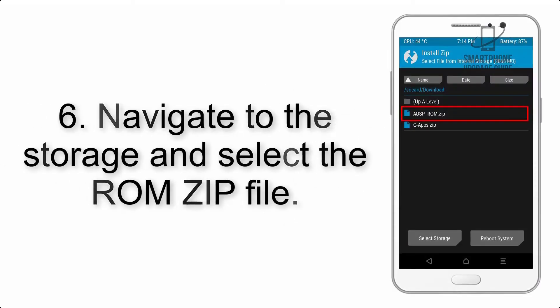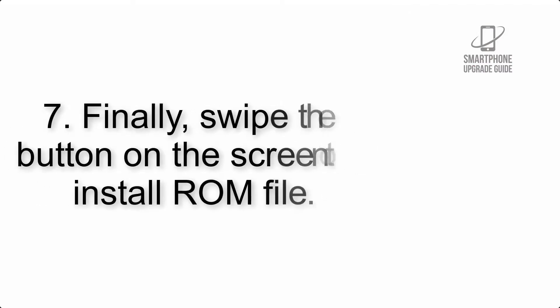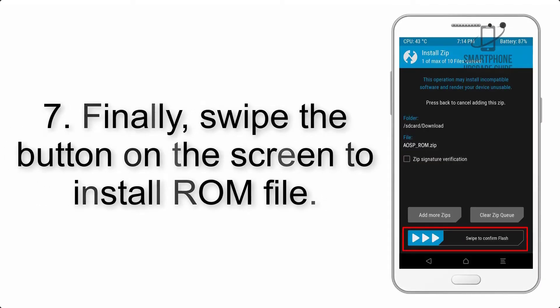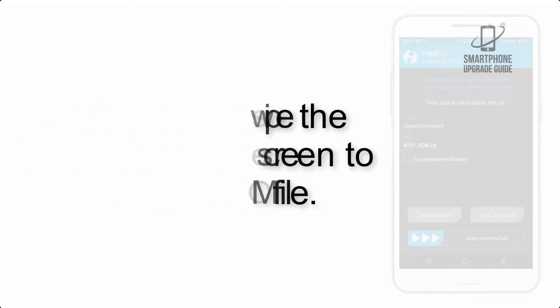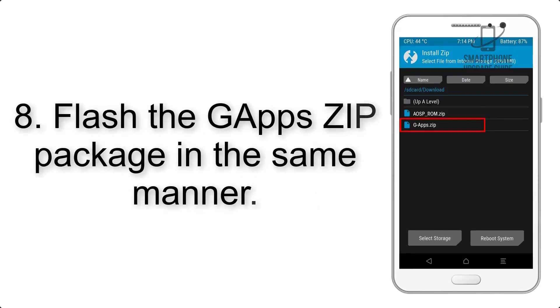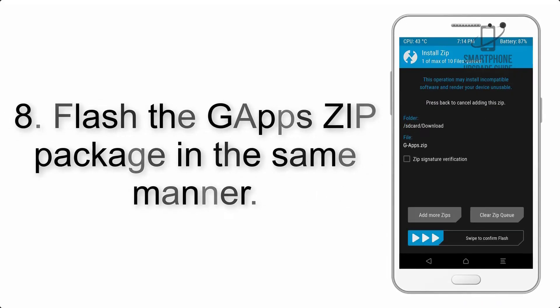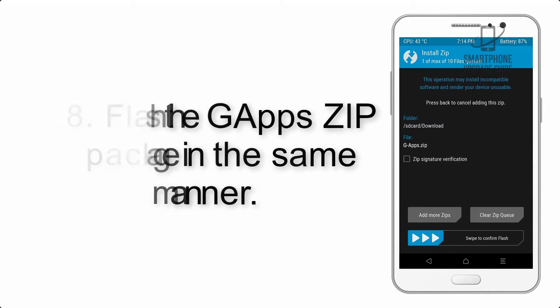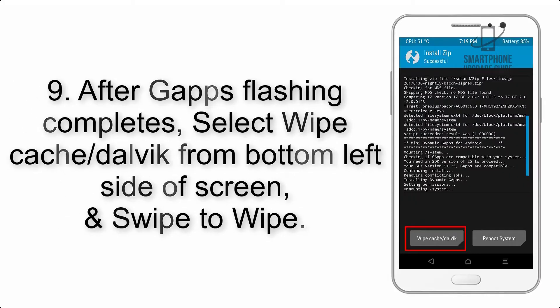Step 6: Navigate to the storage and select the ROM zip file. Step 7: Finally, swipe the button on the screen to install the ROM file. Step 8: Flash the GApps zip package in the same manner.